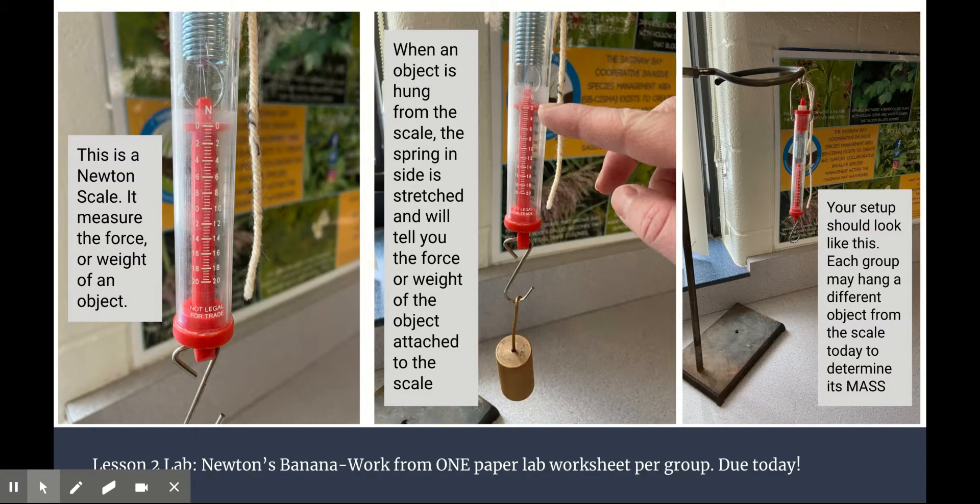So let me talk to you a little bit about the lab. This is Day 2 of Lesson 2. And you're going to be working with your groups on a lab called Newton's Banana. Now the lab calls for a banana to be hung from one of these Newton scales. But really we can use any similar object that has about the same shape and mass.